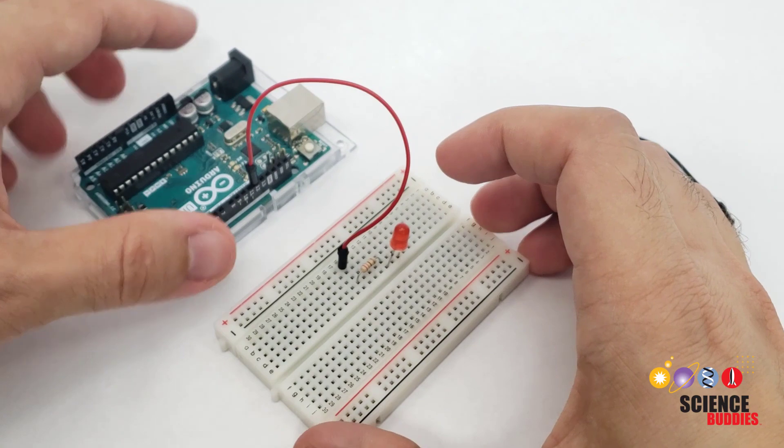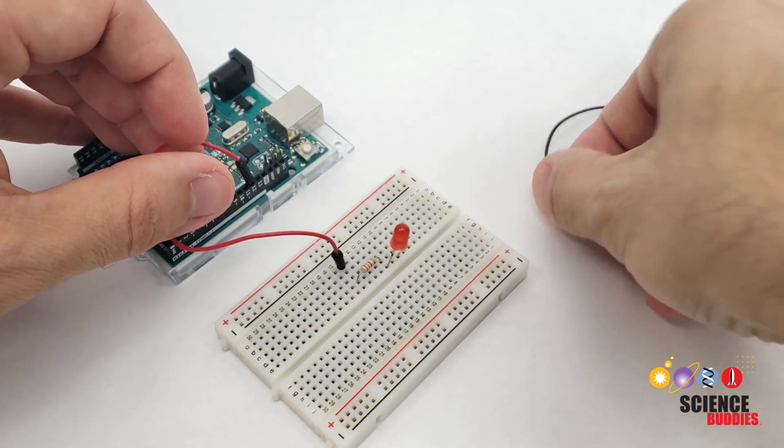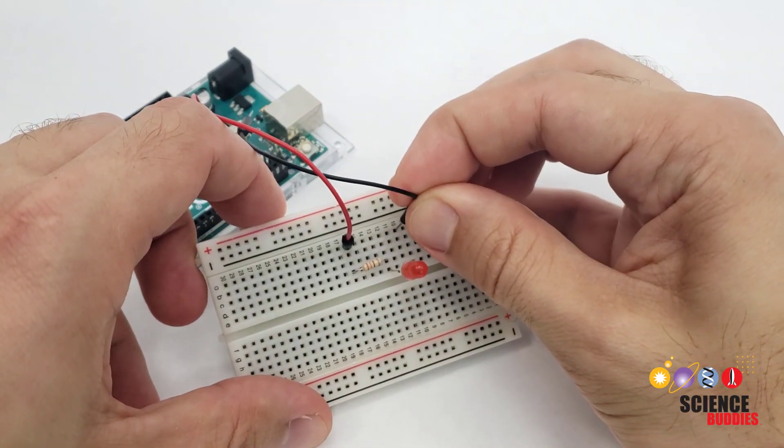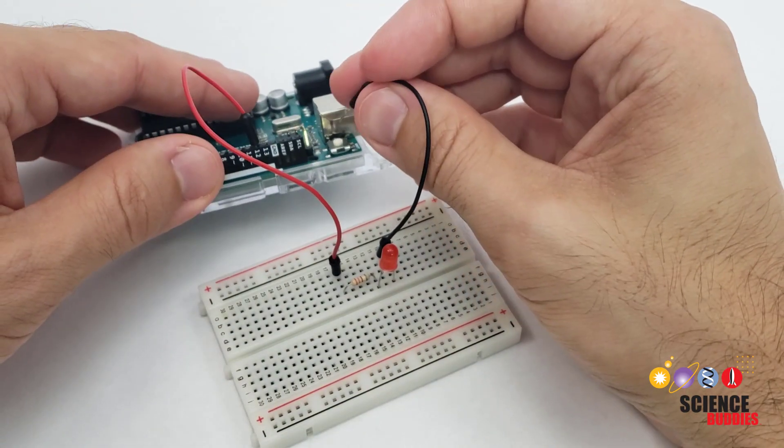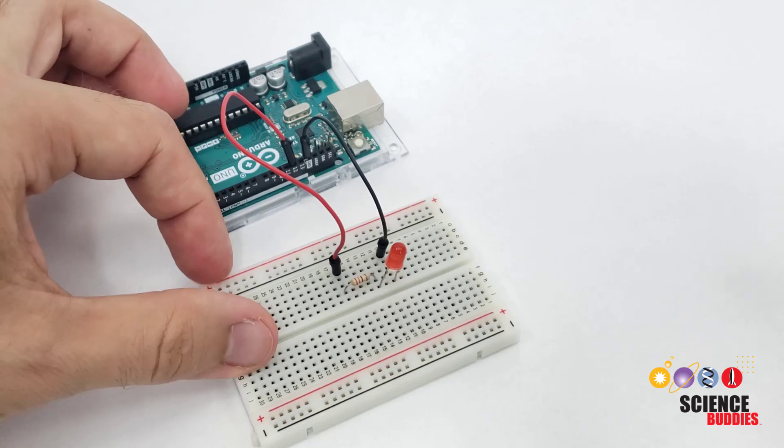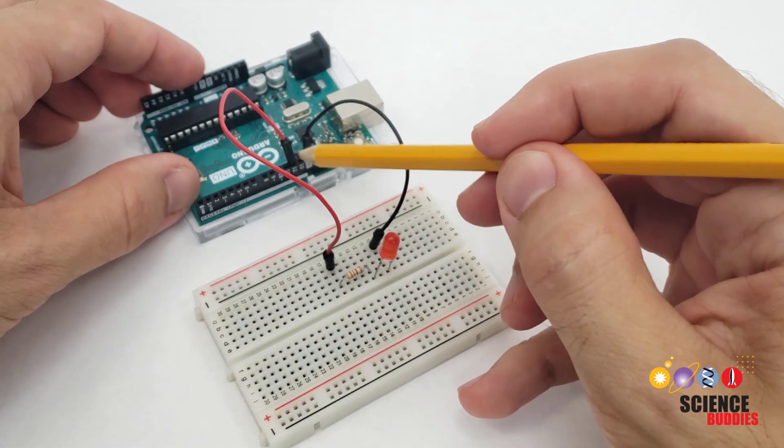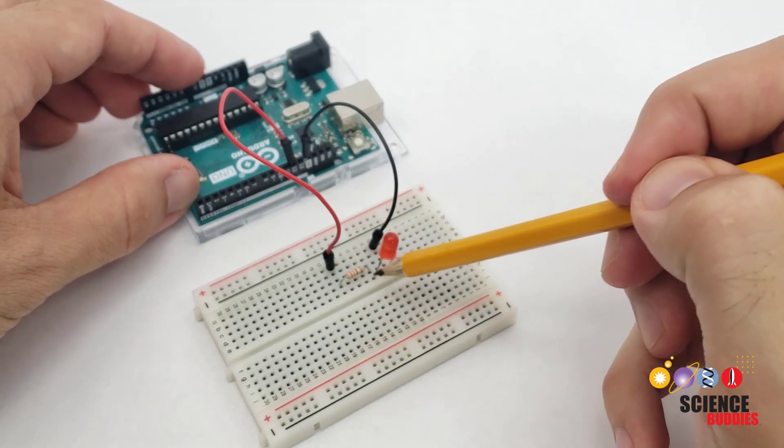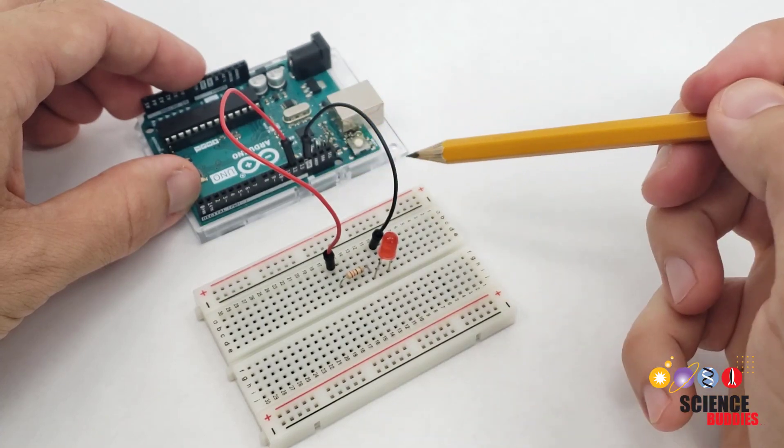In order for electrical current to flow, I need a complete path or a closed circuit. So I'm going to use my second wire to connect the negative end of my circuit, or the short leg of the LED, to the Arduino's ground pin, which is labeled GND. This gives me a closed circuit, or a complete path, for electrical current to flow out of pin 12, through the red wire, through the resistor, through the LED, and then through the black wire back to the Arduino.